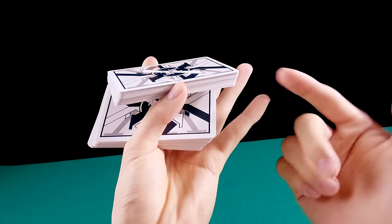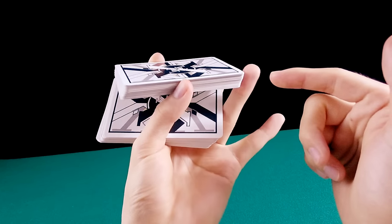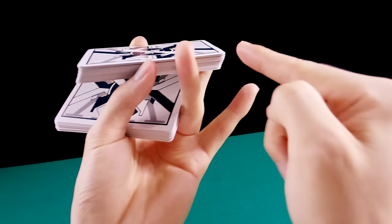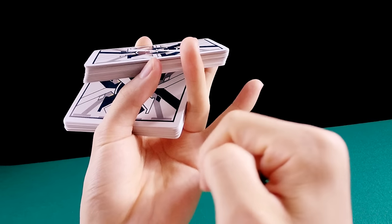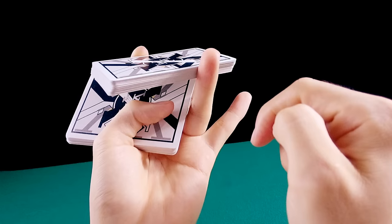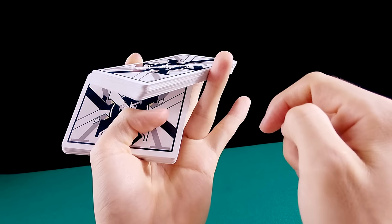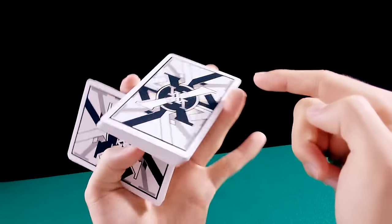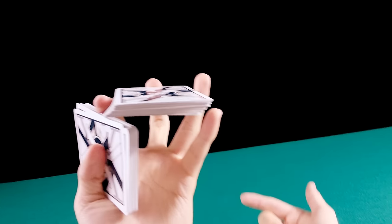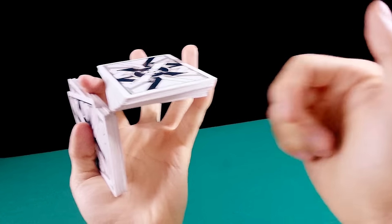E para continuar o giro, o dedo anular vai substituir o polegar. Então, o anular vem aqui e ele fica mais ou menos entre o dedo polegar e a ponta do monte. Está vendo que ele está mais ou menos no meio. Então, o polegar vai sair e você vai continuar o giro com o dedo anular e o dedo indicador. O dedo médio vai ficar aqui para impedir com que as cartas caem para frente.